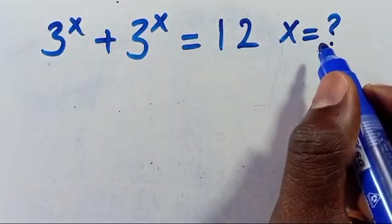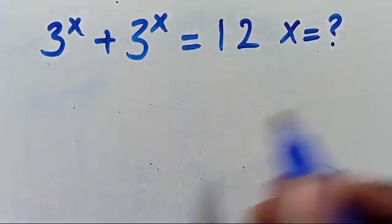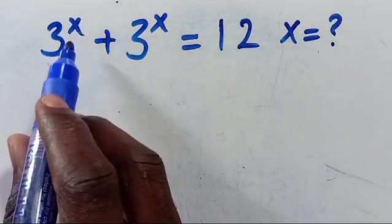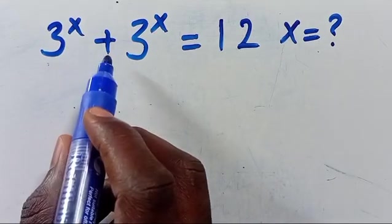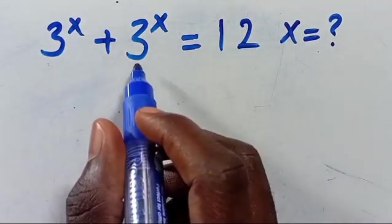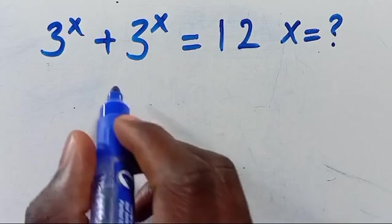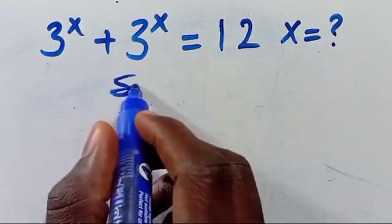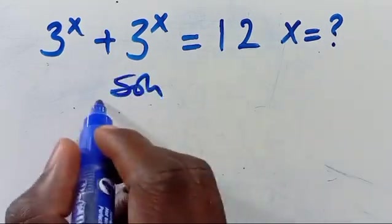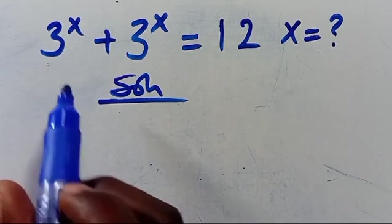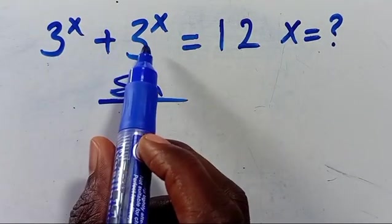Hello. What's the value of X given that you have 3 to the power of X plus 3 to the power of X equals 12? Let's have the solution.